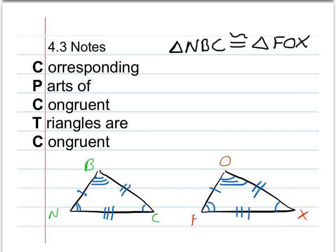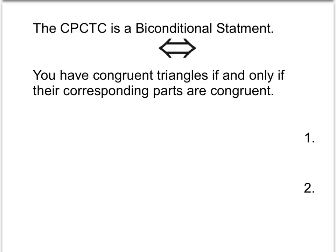So that's the CPCTC. You can say it really fast if you want to: Corresponding parts of congruent triangles are congruent. So it just so happens that the CPCTC is a biconditional. So if we have congruent triangles, then corresponding parts are congruent.